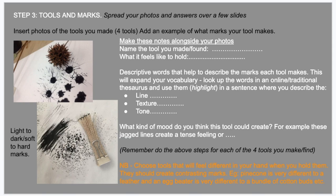Think about what kind of mood you think this tool could create. For example, jagged lines create a tense feeling, or dark spots with little sprinkles on the side might create a magical, twinkly, firework-like feeling. Describe what kind of mood the marks make, because you're going to be using these marks later for the next step. Try to make your marks work from light to dark, soft to hard, to get a variety of the marks the tools can make.